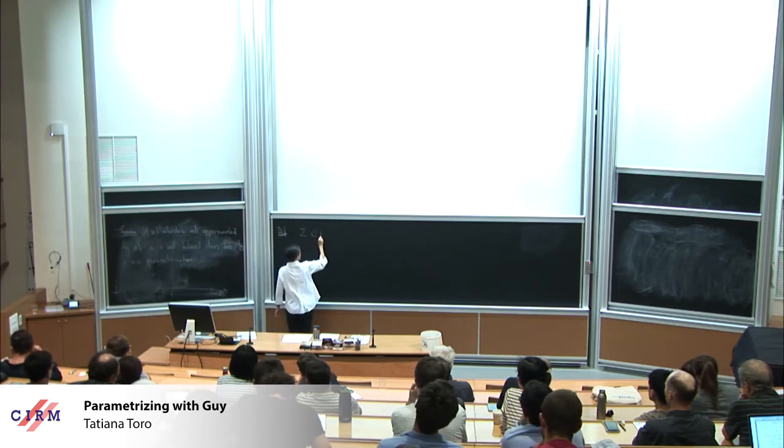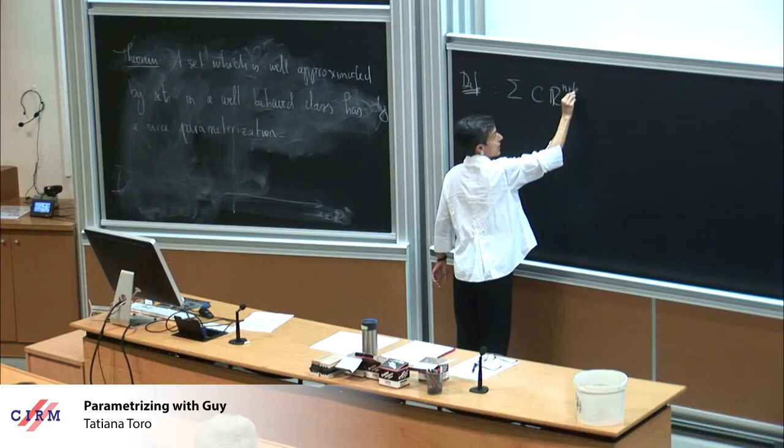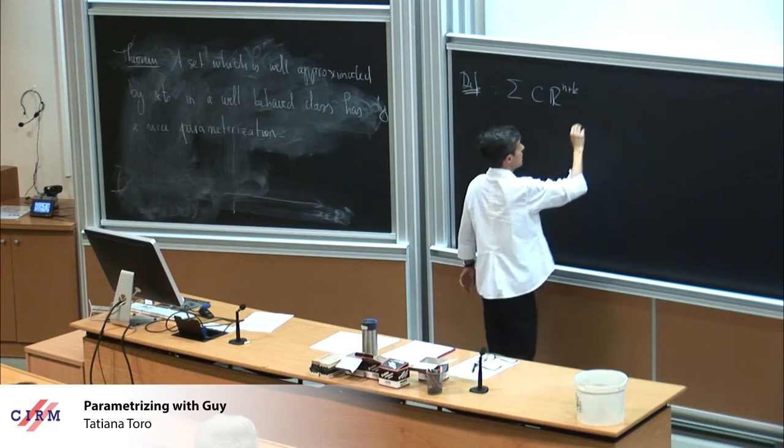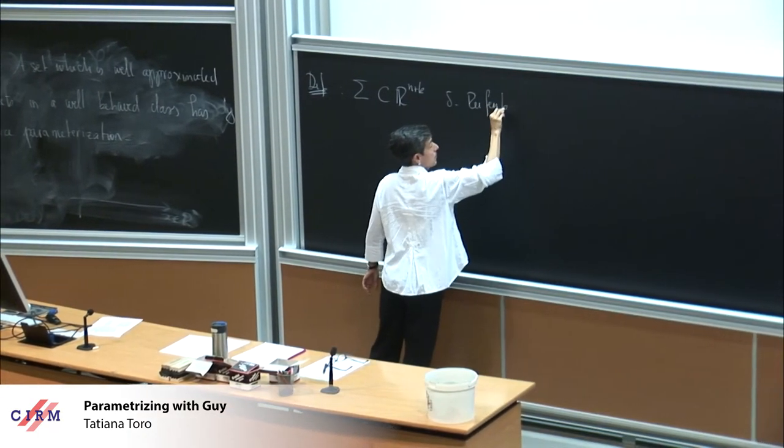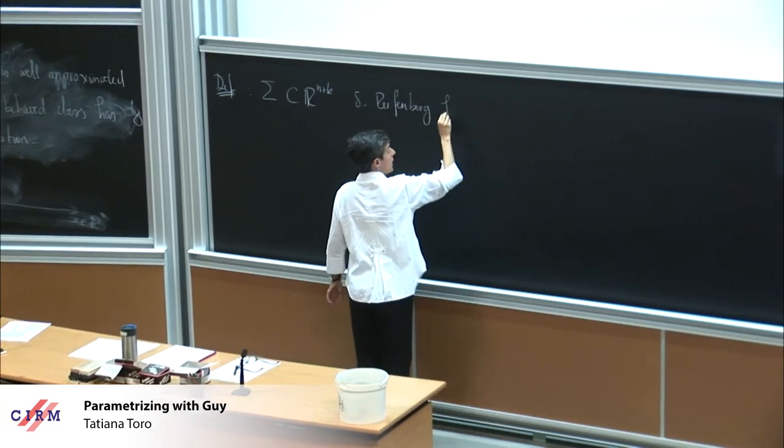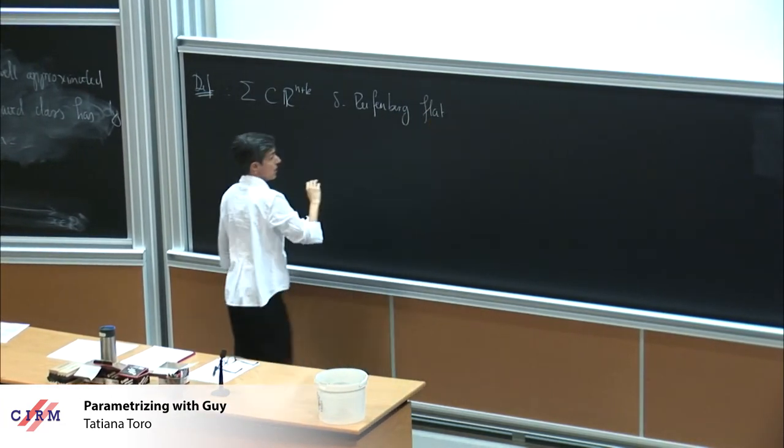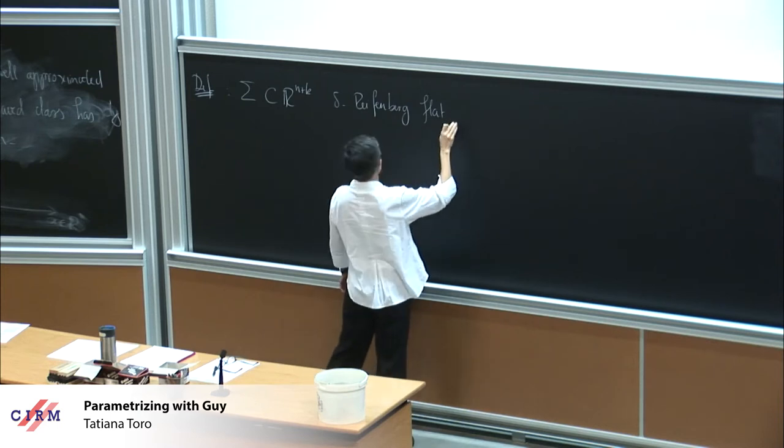I will state the result. It was not good enough for the purposes in geometric analysis. He proved something better four years later, and nobody thought of this result any longer. But, so, let me start by defining a Reifenberg flat set. So, we have sigma, who lives in Rn plus k. It's a closed set. We said that it's delta Reifenberg flat.